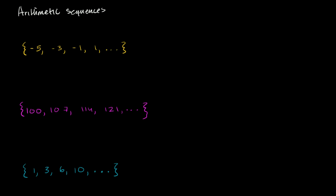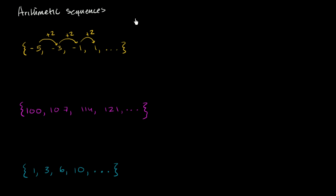Let's look at this first one right over here. To go from negative 5 to negative 3, we add 2. Then to go from negative 3 to negative 1, we add 2. Then from negative 1 to 1, we add 2. So this is clearly an arithmetic sequence — we're adding the same amount every time.